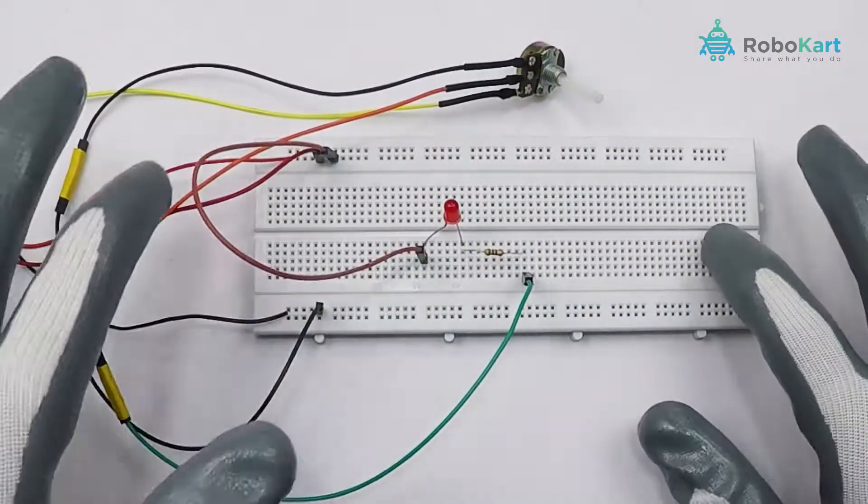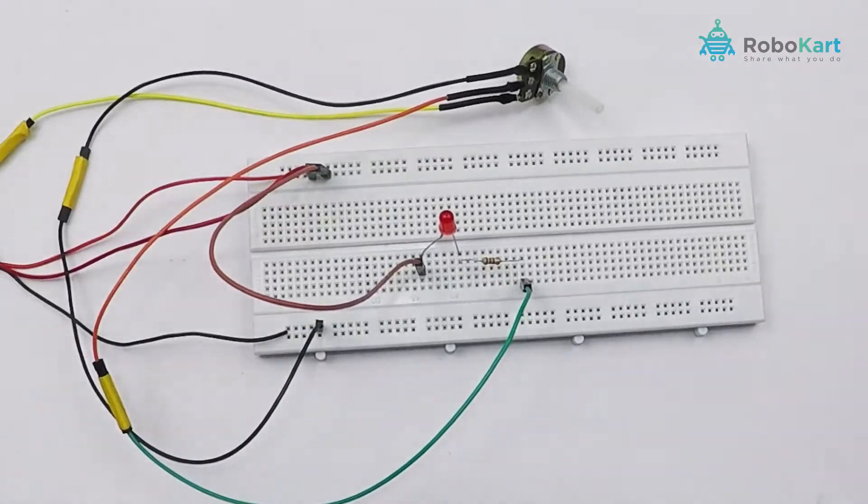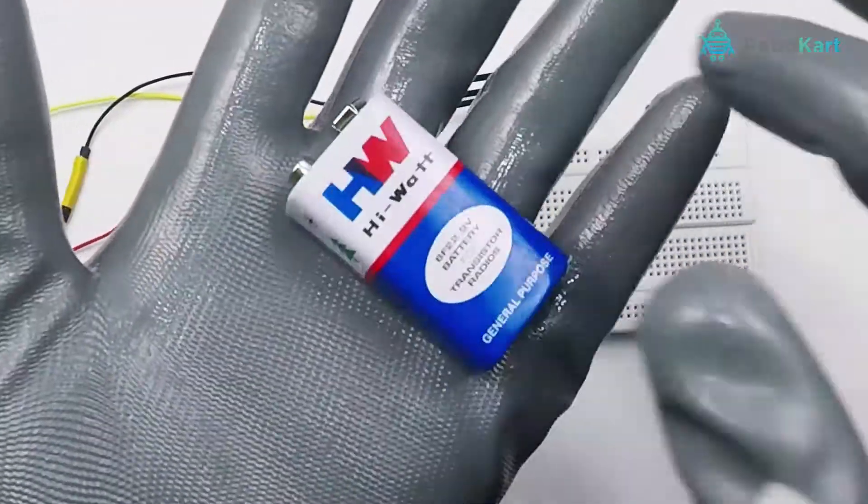After the data pin is connected to the resistor, now we need to complete the circuit by connecting the battery.